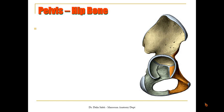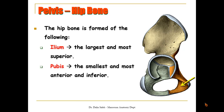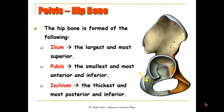The hip bone is formed of the following: the ilium, which is the largest and the most superior bone; the pubis, which is the smallest and the most anterior and inferior bone; and the ischium, which is the thickest and the most posterior and inferior bone of the three.